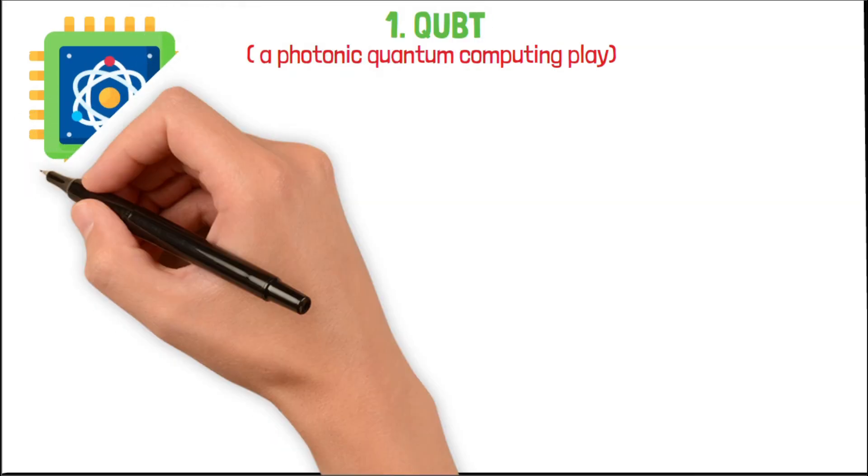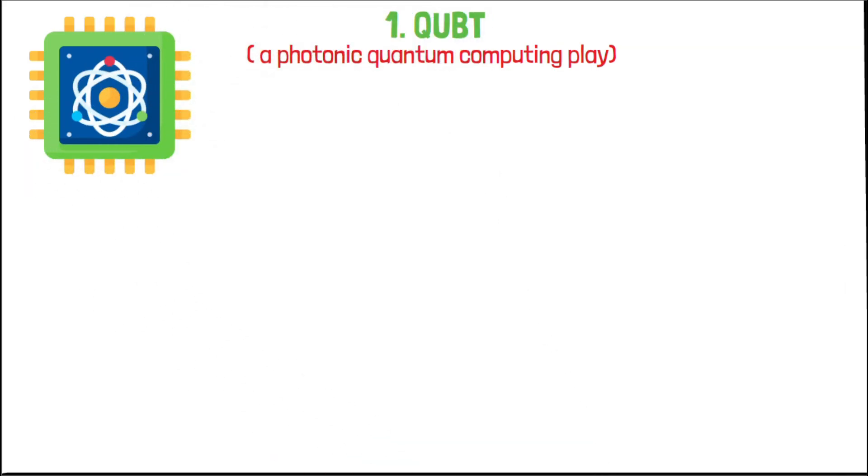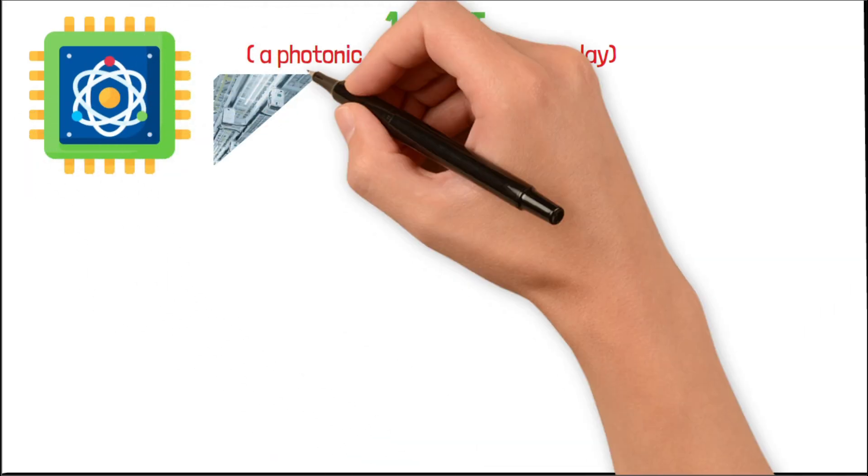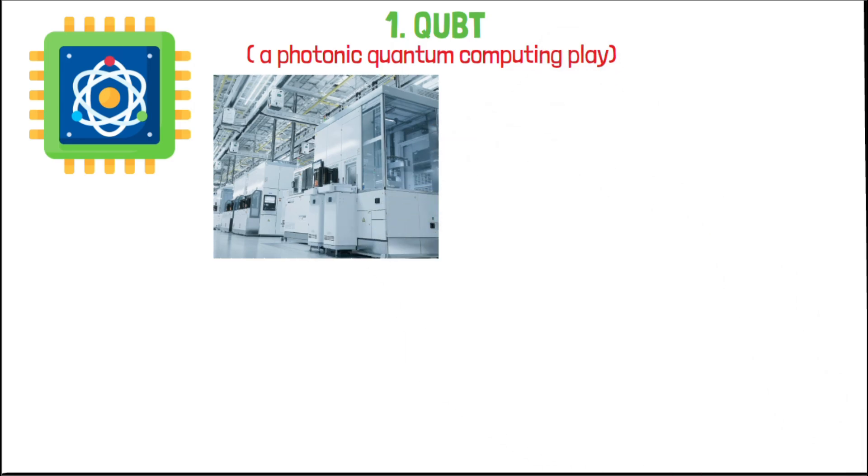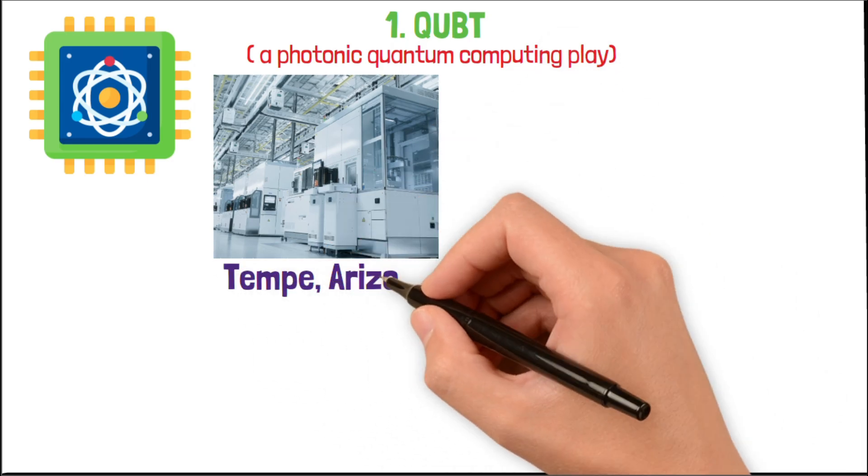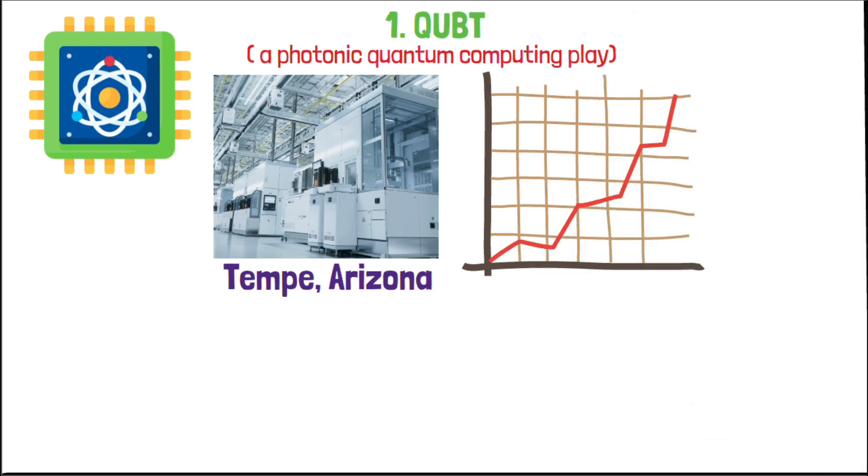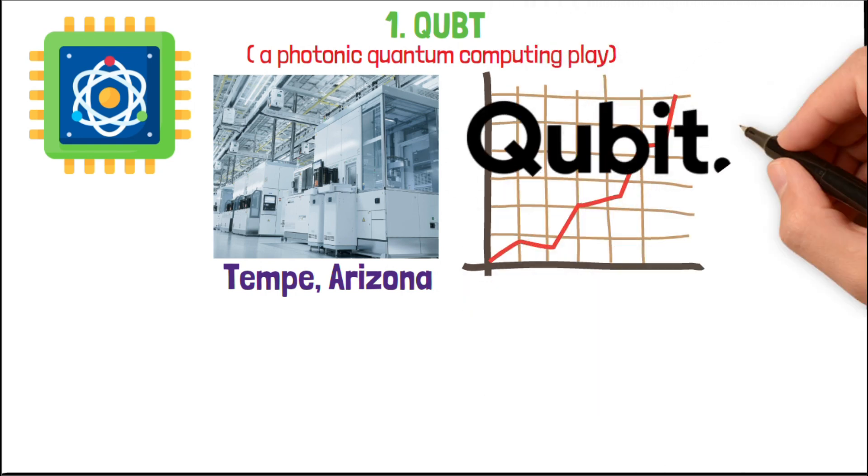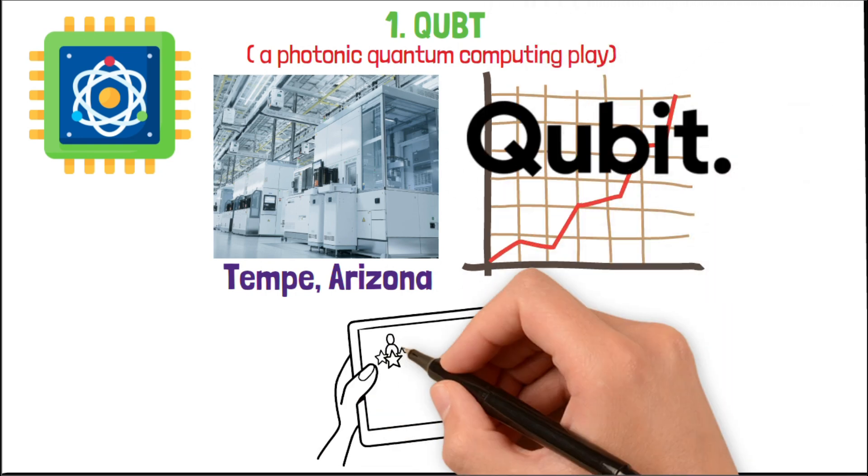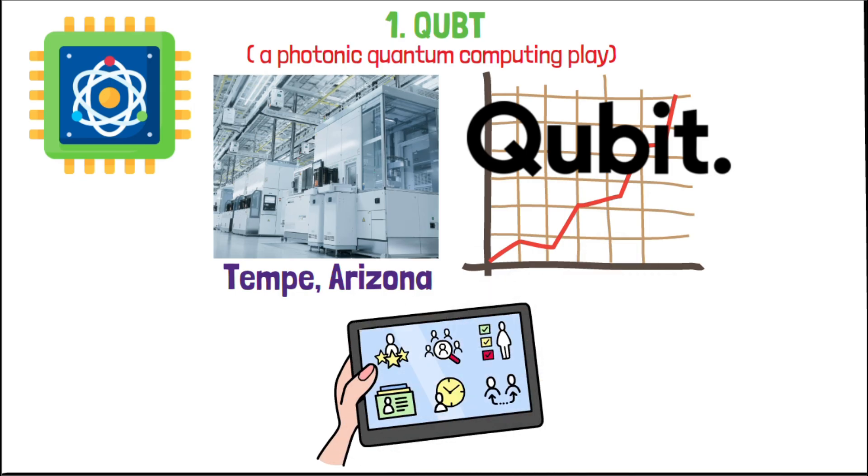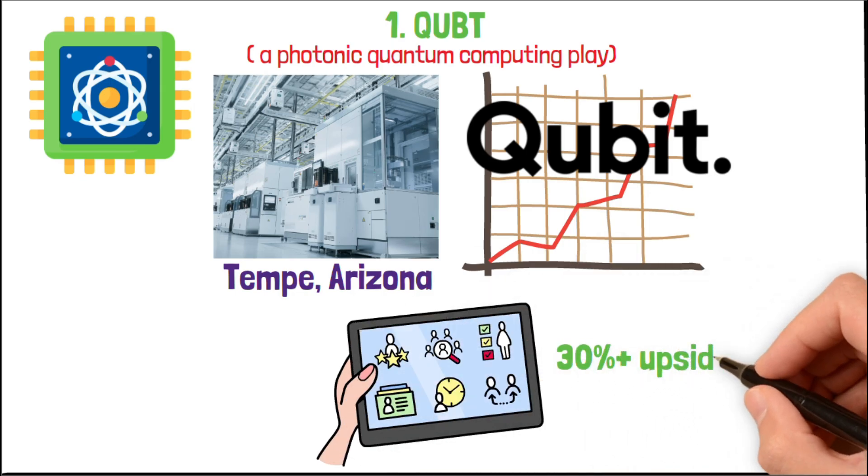First up, QUBT. A photonic quantum computing play. Unlike traditional systems that require deep cryogenic cooling, they're building quantum chips that can run at room temperature. That's huge. They're also developing a photonic foundry in Tempe, Arizona and already have purchase orders lined up. If photonics becomes the scalable future of quantum, QUBT could become a major acquisition target. Moderate analyst ratings already project 30% plus upside. And that's without a major breakthrough.